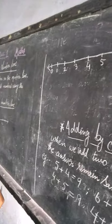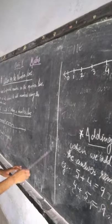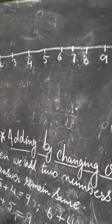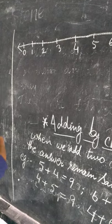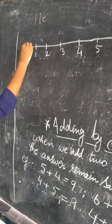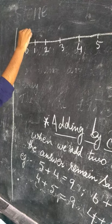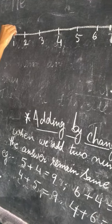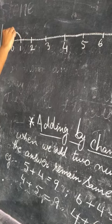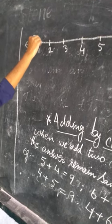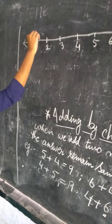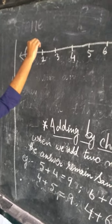Okay. Start from zero — make a number line, start from zero, and move forward three steps.